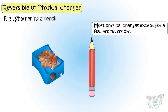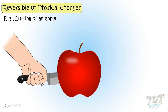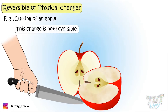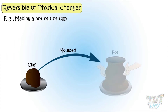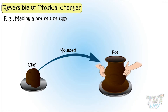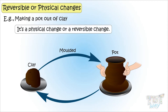Here is another example: cutting of an apple. If an apple is cut into slices, only the shape of an apple is changed. Also, the amount of matter is not changed — only the object is divided into some parts. This change is not reversible. Here is another example: making a pot out of clay. When clay is molded into a pot, the shape of clay is changed and no new matter is formed. A fresh pot can again be made into a ball of clay, so it is a physical change or a reversible change.